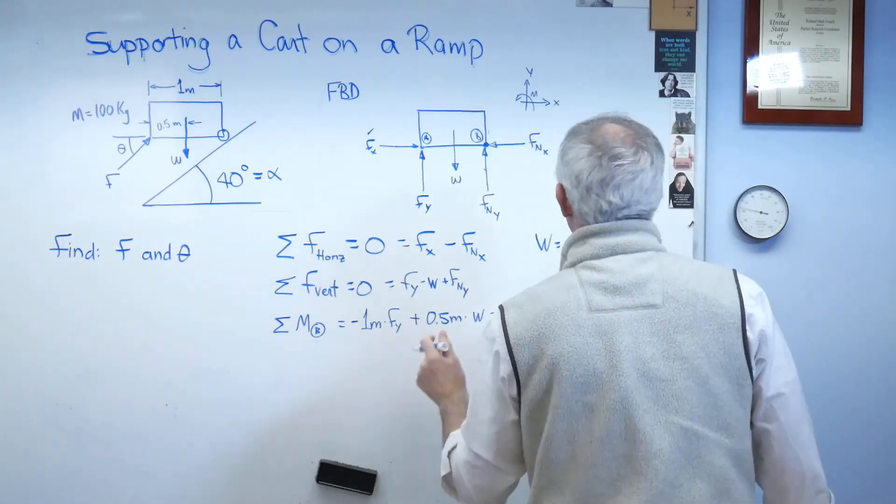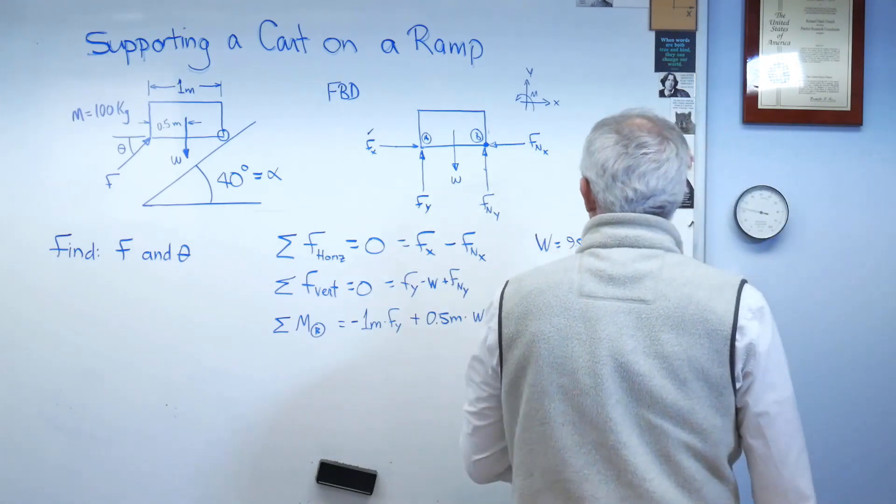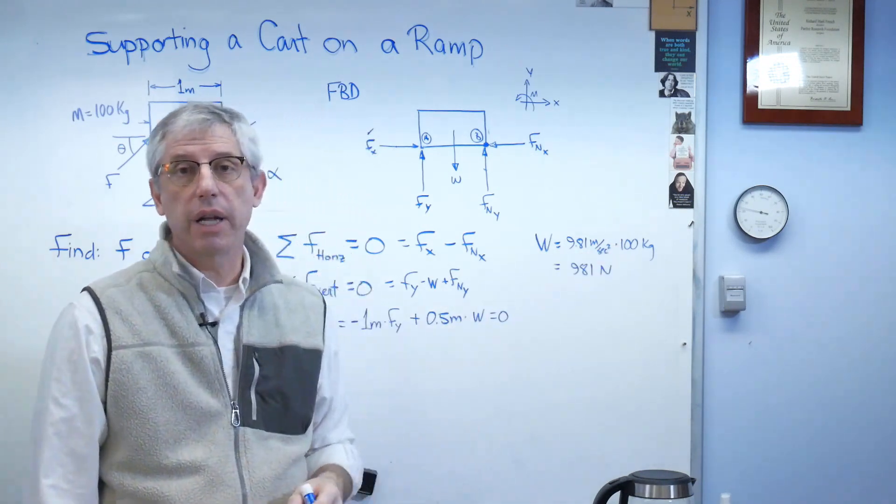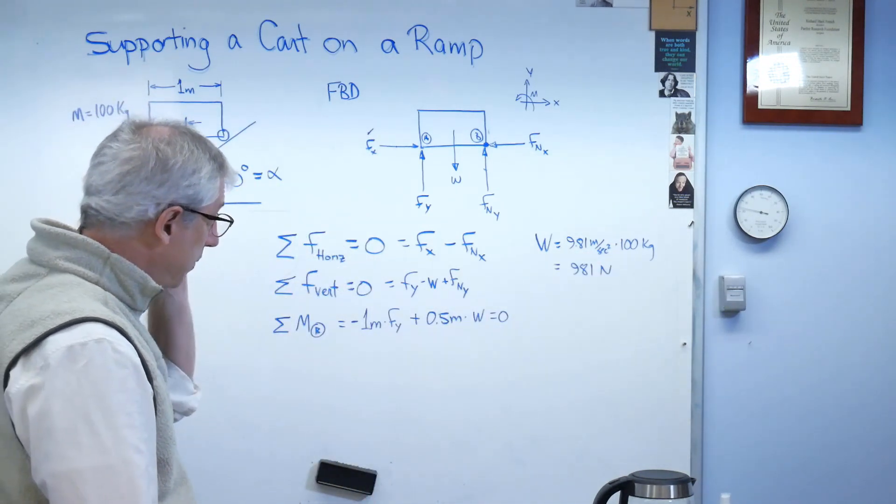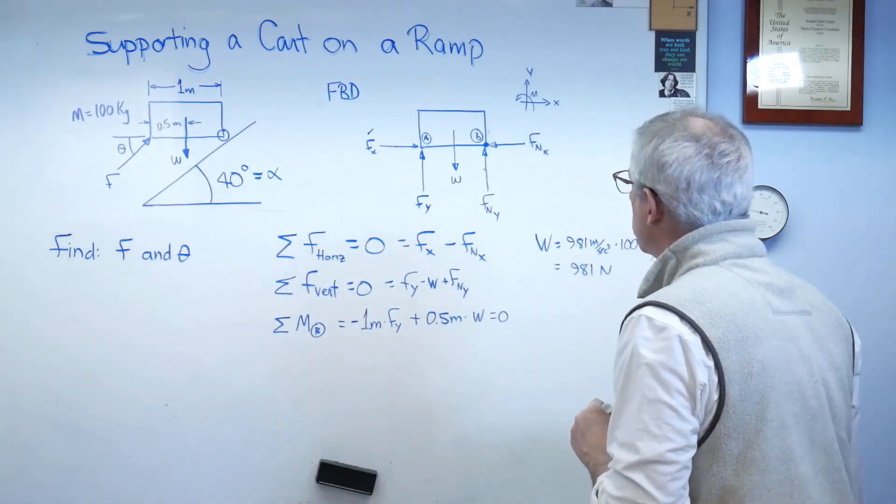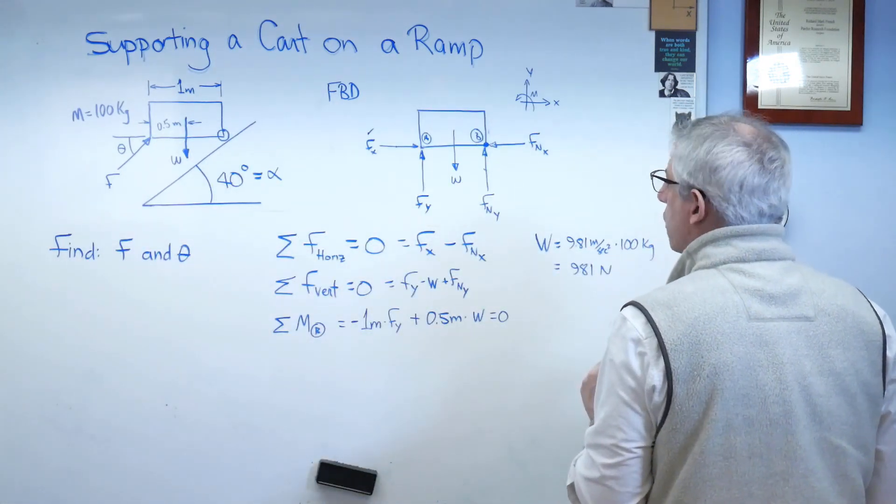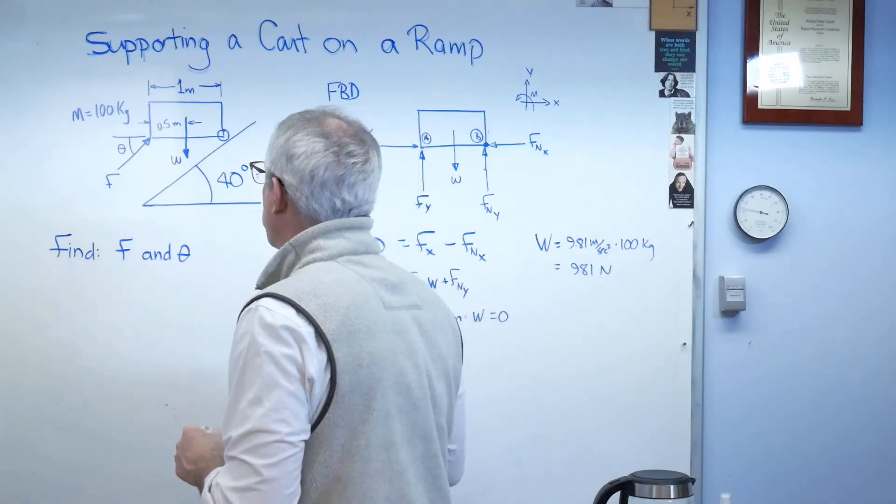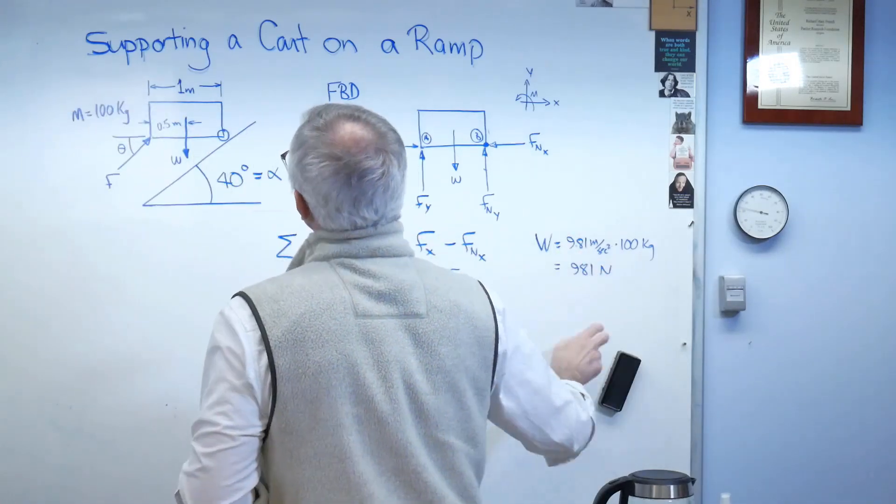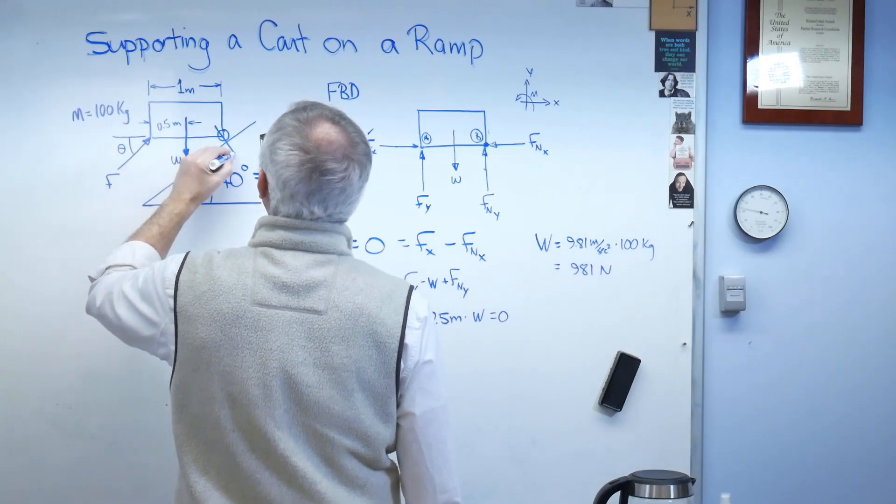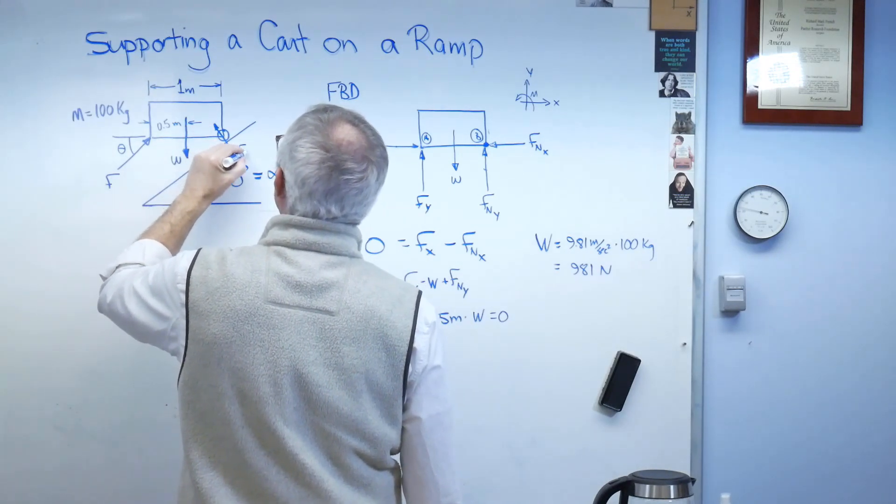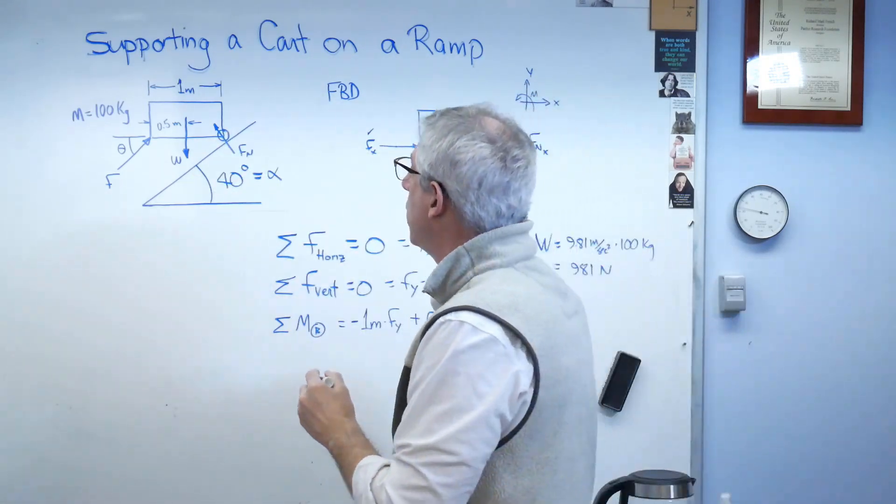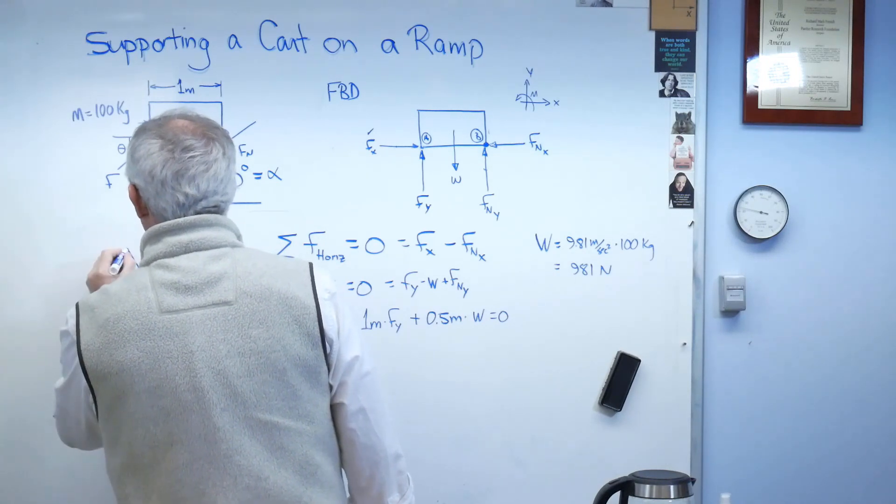Let's see, W is 9.81 meters per second squared times 100 kilograms, so it's 981 newtons. So we know what that is. Let's see, how about the normal forces here? Let's draw a force triangle. I'm starting to run out of real estate on my little board here. I'm going to go over here just because that's where the room is.